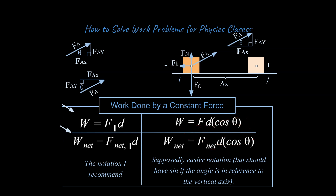I am not a fan of the traditional cosine-form equations, and I'll briefly explain why. Most problems you'll get for work will have the force applied at an angle measured to the horizontal, like theta measured to the horizontal axis — and for that you'd use cosine. But I have seen problems where an angle is measured to the vertical axis, and for that you would actually have to use sine, not cosine. So the more general versions of these equations are more helpful.